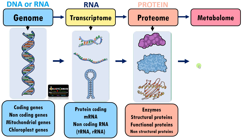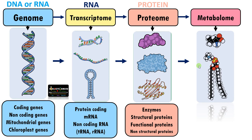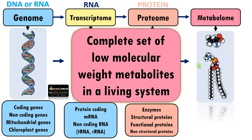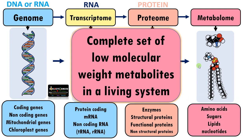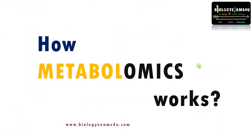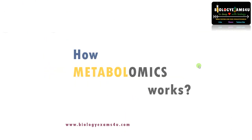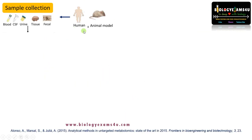Finally, this information is passed on to the metabolome through the enzymatic actions of these proteins. The proteins catalyze many chemical reactions and metabolic pathways, resulting in the formation of many small molecules that form the metabolome — the complete set of low molecular weight metabolites in a living system, including amino acids, sugars, lipids, nucleotides, etc.